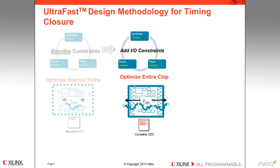Baseline constraints ensure that core timing constraints are clean. Iterate on the baseline constraints in a post-synthesis netlist until core timing is clean. You may have to add false paths to static signals in the design or paths that are multi-cycle. Remember to add multi-cycle path constraints for both setup and hold. If after synthesis the core timing is clean, proceed to the implementation stage to ensure that after place and route, core timing is still clean. Modify the constraints or the RTL — for example, adding pipeline stages — and run synthesis and implementation again until core timing is clean.